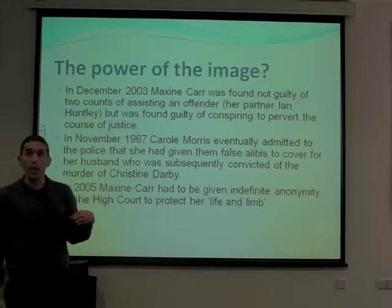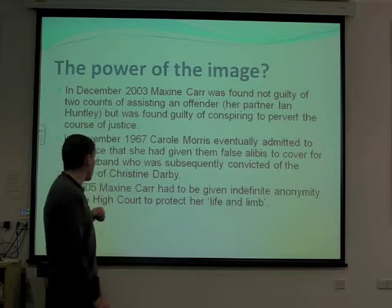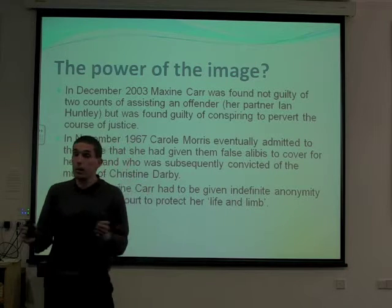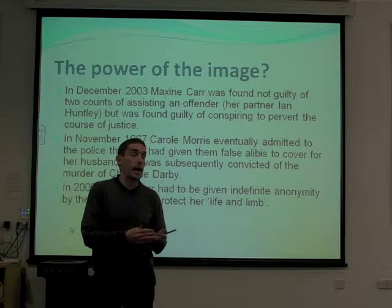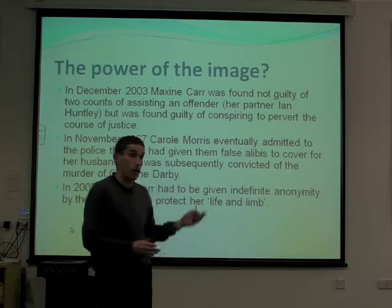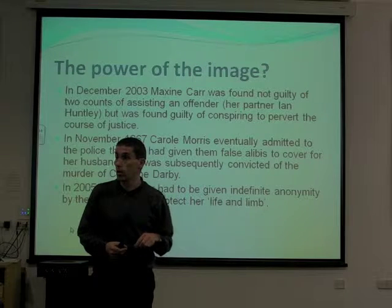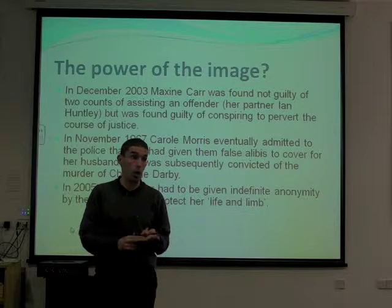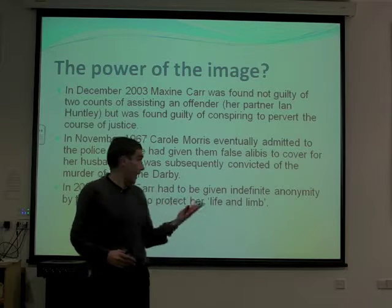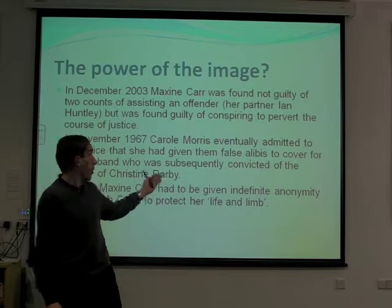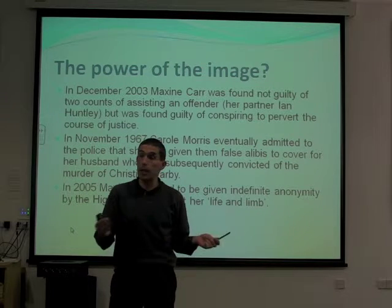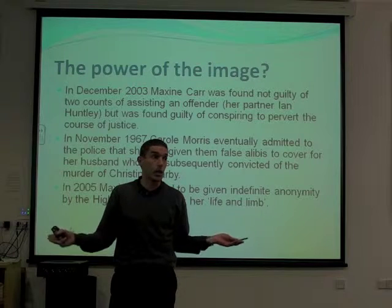In 2005, Maxine Carr had to be given lifelong anonymity from the High Court to protect her life. She was the first person in English law who has not been convicted of murder to have been granted one of these anonymous orders. The other three people are John Thompson, Robert Venables, and Mary Bell. So Maxine Carr has had this order, but her crime was conspiring to pervert the course of justice — very different to the three people who committed serious murders.